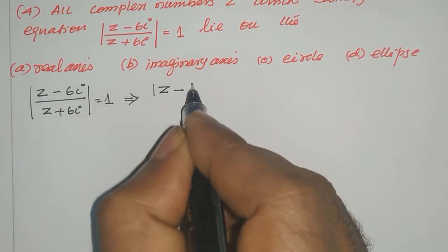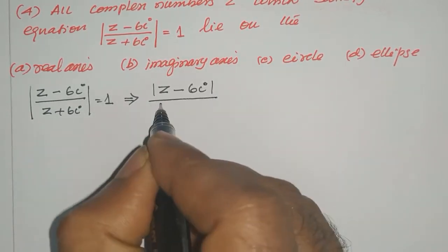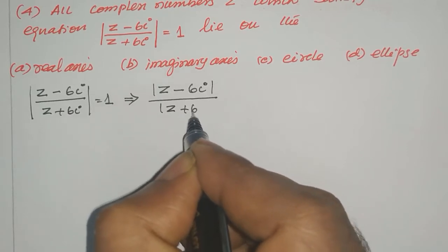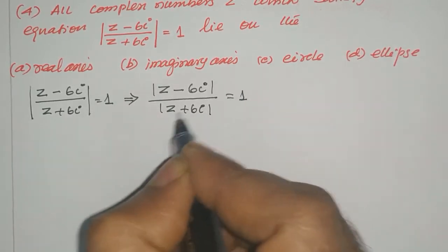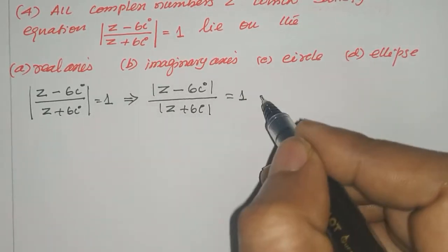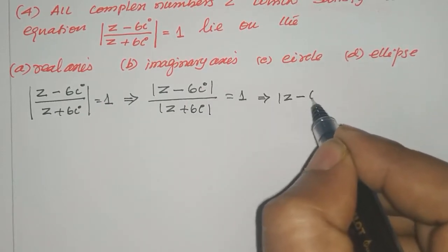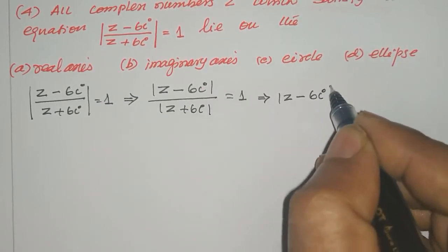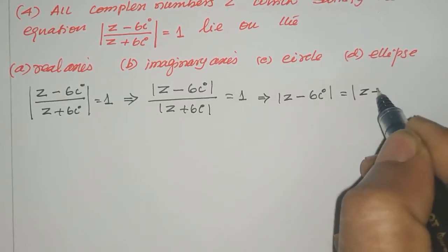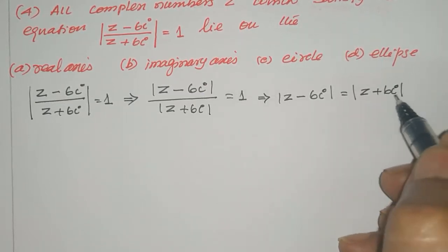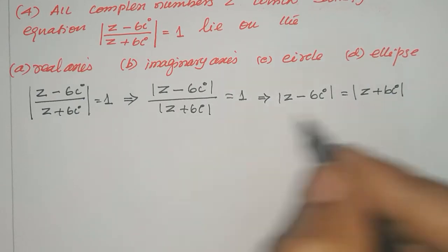Modulus of z minus 6i divided by modulus of z plus 6i equal to 1. Cross multiply. Modulus of z minus 6i equal to modulus of z plus 6i. Now we apply the modulus property.